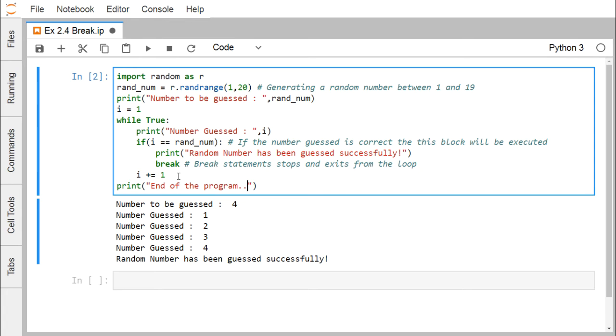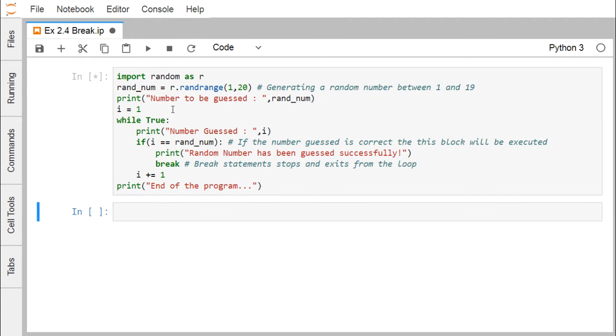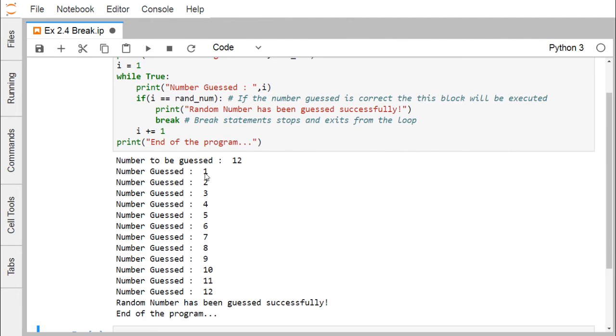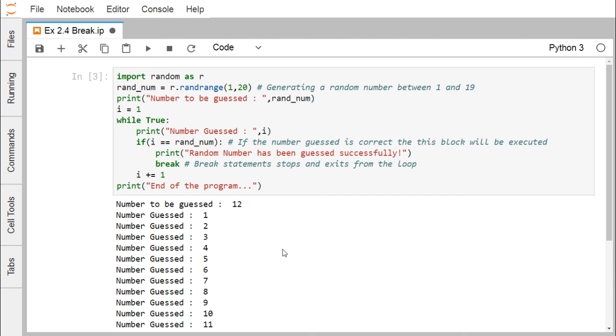If you write any statement after this, the respective statement will get printed. Now here the random number guessed is 12. Loop has got executed for i equals 1 to 12, random number has been guessed successfully, and then end of the program is getting executed. In this way you have discussed that what is the purpose of break. Break statement actually stops the looping and then it will exit from the loop construct. Using this Python code we have demonstrated the use of break in our respective example. Thanks for watching this video.